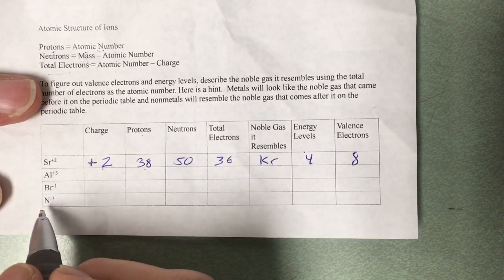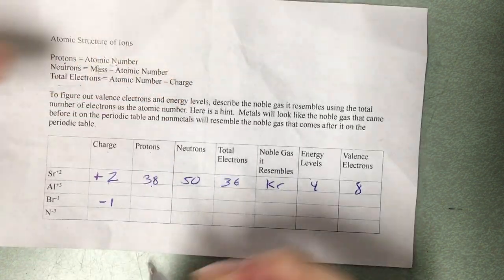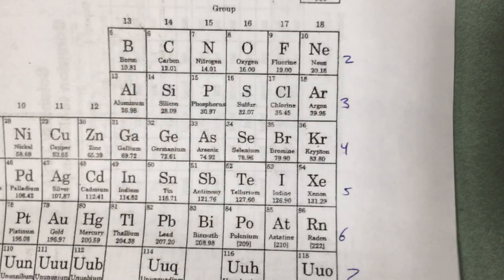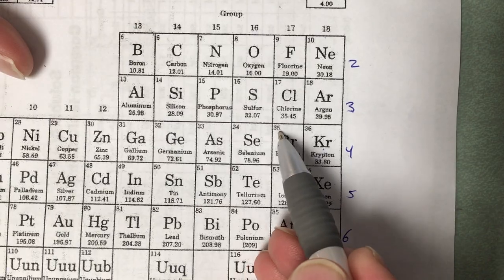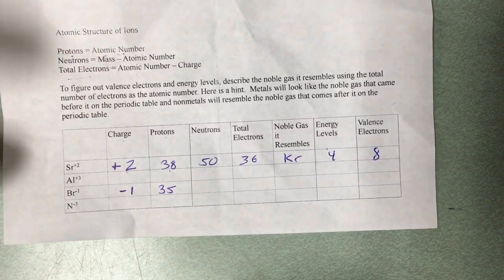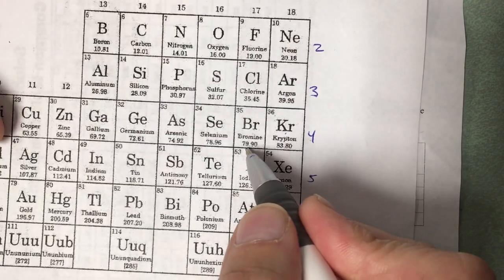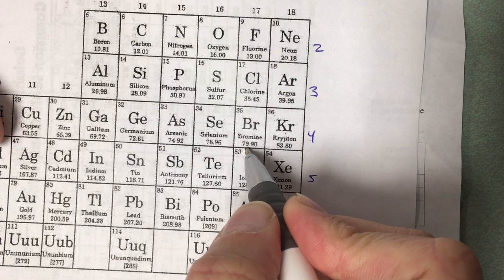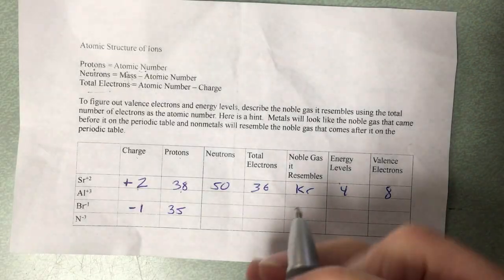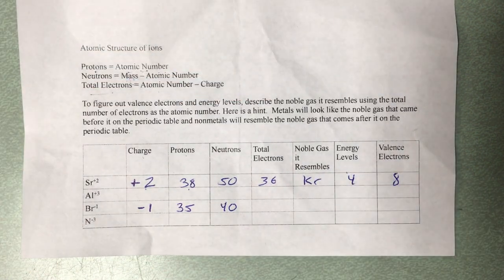Let's skip aluminum and go down to bromine and do a negative ion. This one has a charge of negative 1. Protons are still atomic number — always have been, always will be; doesn't matter what type of atom it is. There's bromine; its atomic number is 35. Neutrons are mass minus atomic number — always have been, always will be, doesn't ever change. The mass for bromine is 79.90, so that rounds to 80, minus 35. 80 minus 35 is 45.